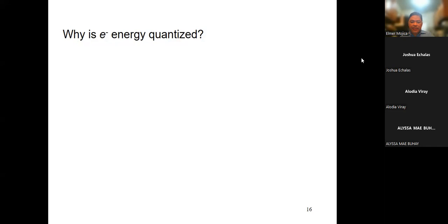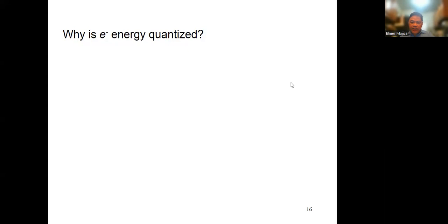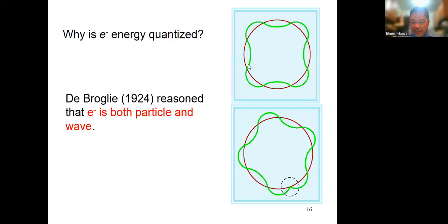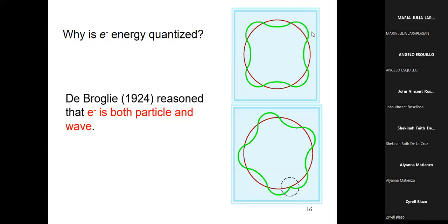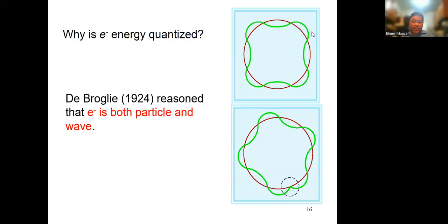If the electron, which is usually matter, can be quantized, then it can also have wave properties. If the electron looks like this, it can also behave like a wave. You can observe this behavior if you pluck a string of a guitar — when you pluck it, you'll see the wave-like properties.